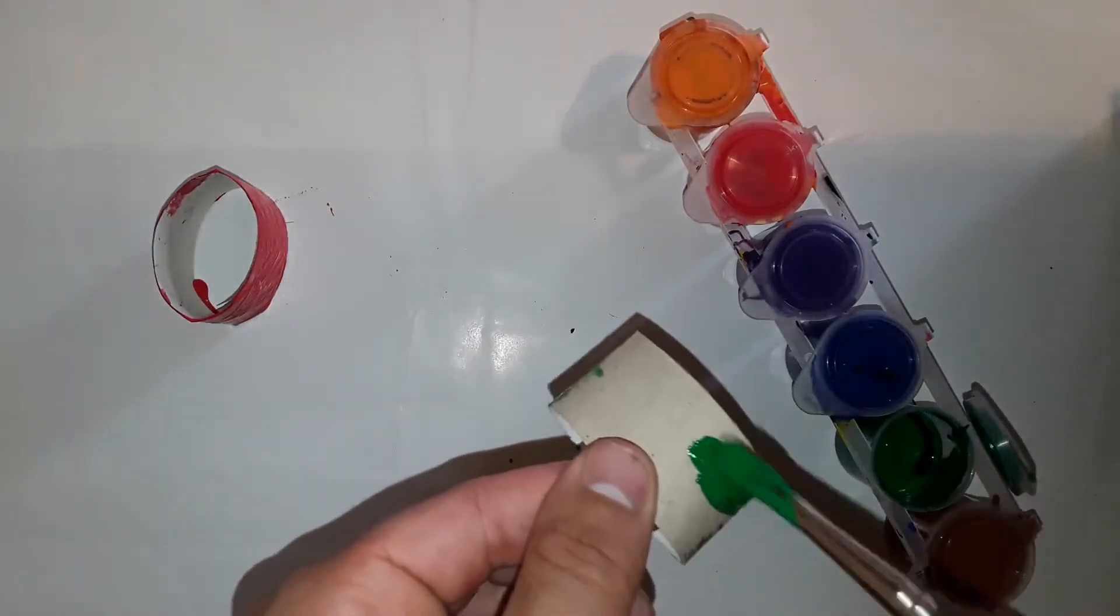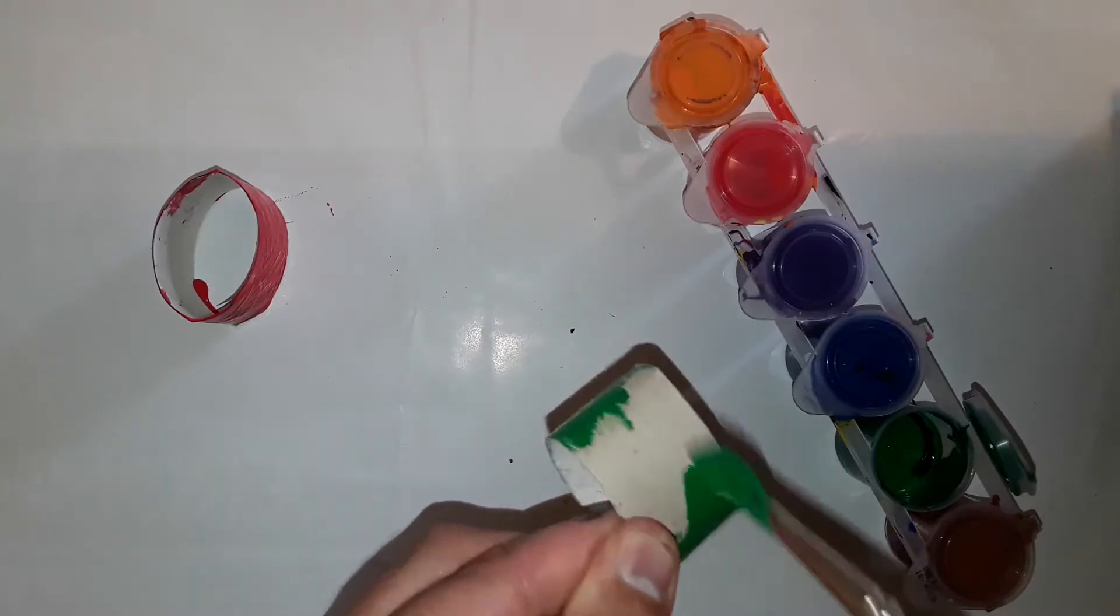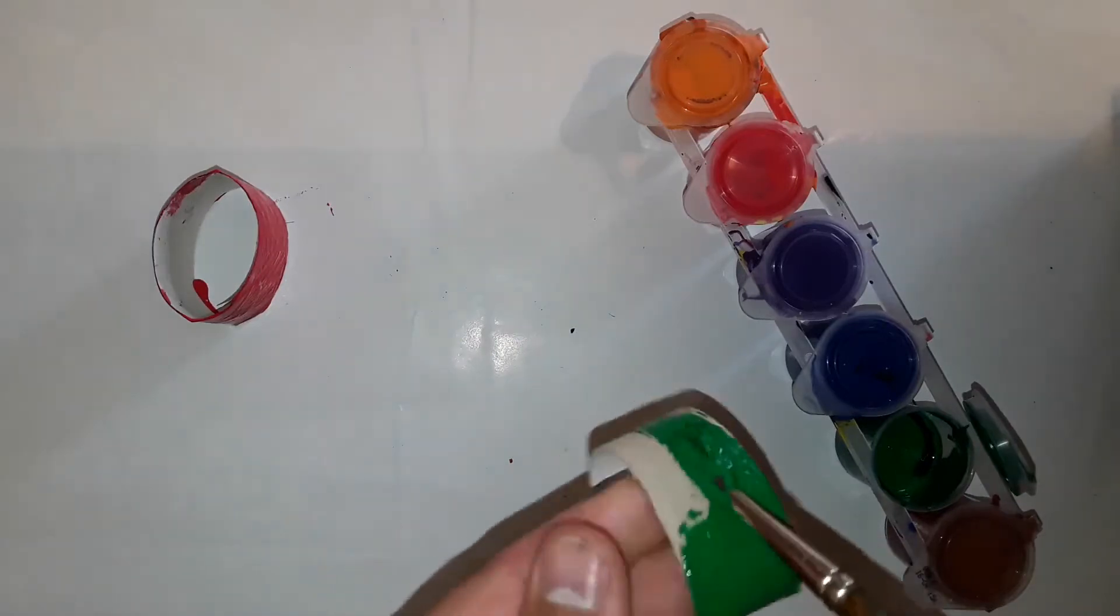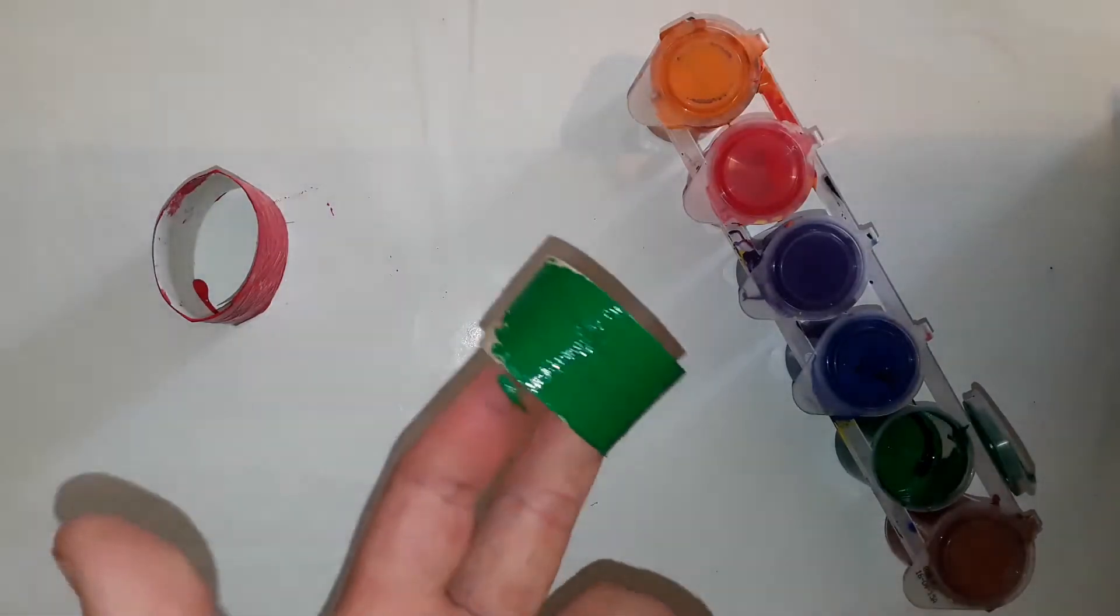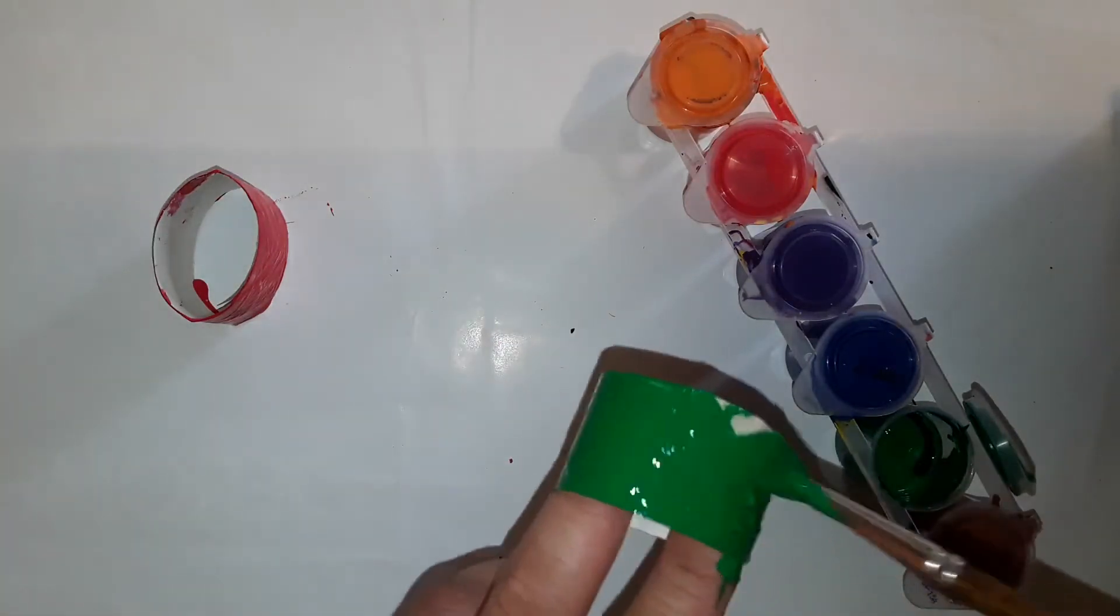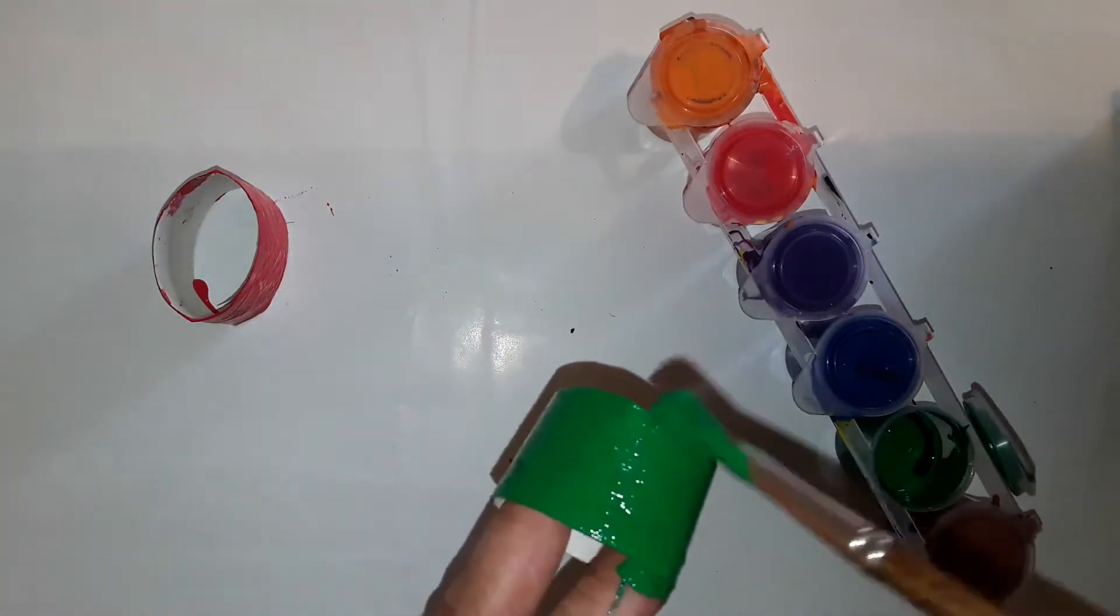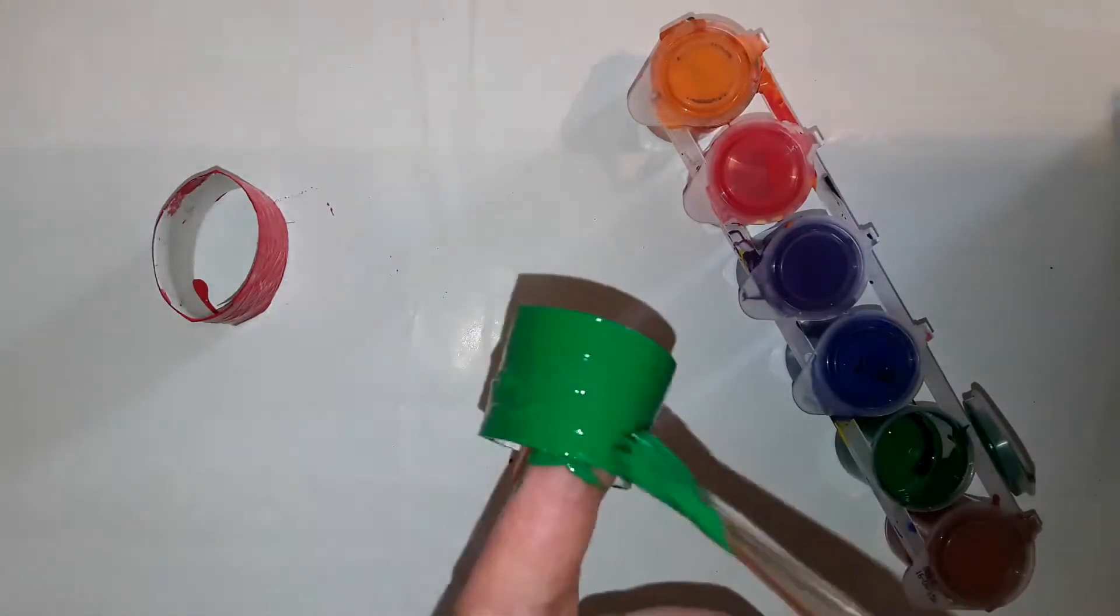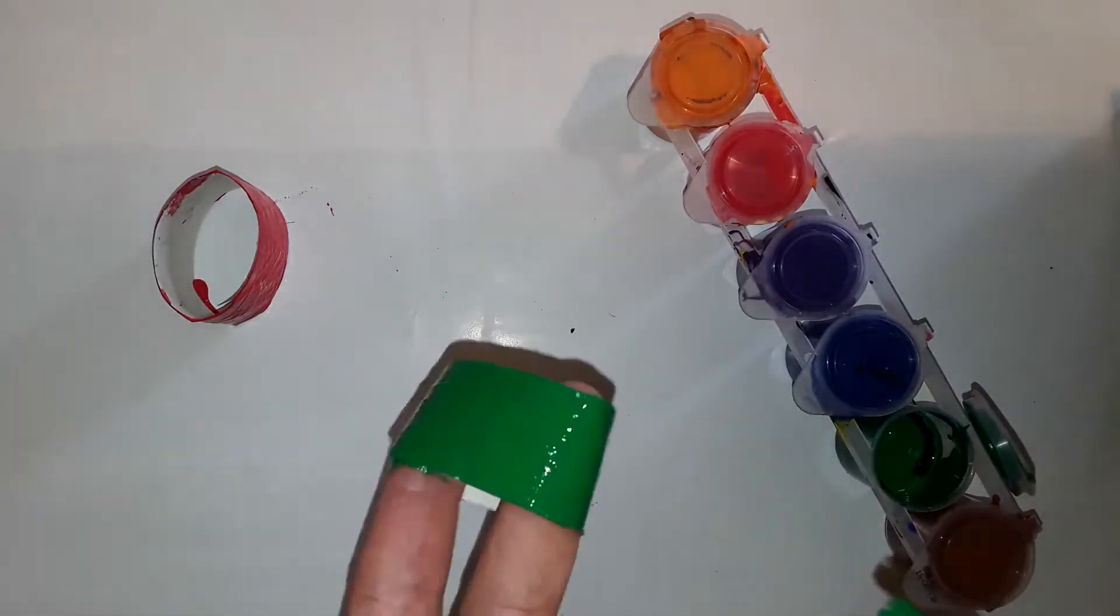If you want to make it easier to hold the roll, then you can, like I'm doing now, put two fingers inside and pull them apart a bit. Then you can easily turn the roll and reach everywhere.